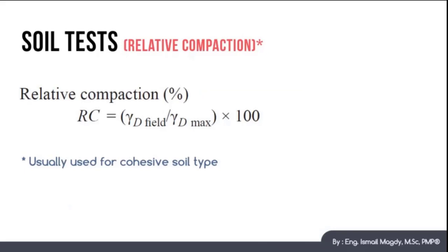Another test we have is called relative compaction, and it is another important index to identify the soil compaction level at site, and this test is usually carried out for cohesive soil. The RC, which is the relative compaction, equals to gamma dry field over gamma dry maximum, all multiplied by 100.